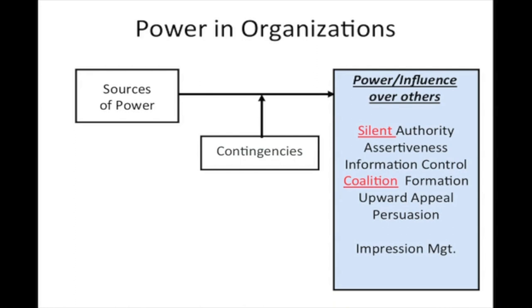Next we have upward appeal — appealing to a higher authority, sometimes including the firm's goals. Children use this all the time: 'If you don't stop, I'm telling mom.' One child has no power over the other, but by threatening to go to a higher authority, they've expressed a source of power and influenced their sibling through upward appeal.